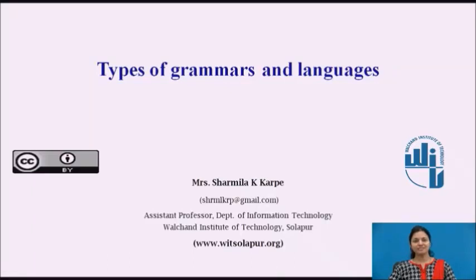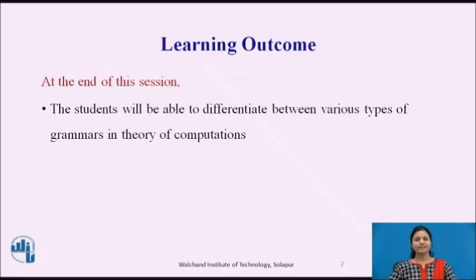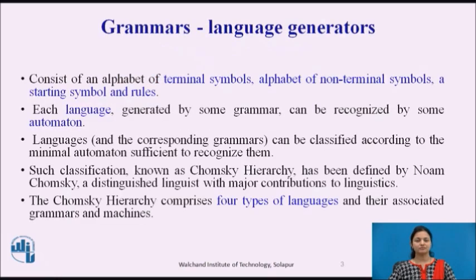Welcome to the session on types of grammars and languages. At the end of this session, the student will be able to differentiate between various types of grammars in the theory of computation. Grammars are nothing but language generators. Grammars consist of terminal symbols, alphabet of non-terminal symbols, a starting symbol, and rules. Each language generated by some grammar can be recognized by some automaton. Languages can be classified according to the minimal automaton which can recognize them.